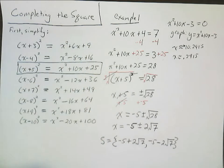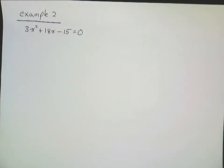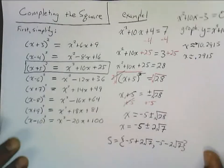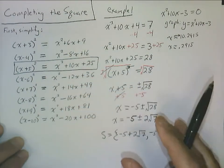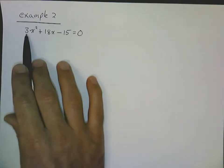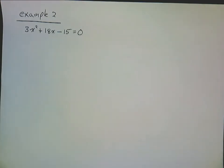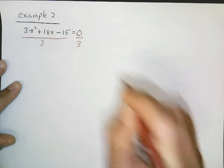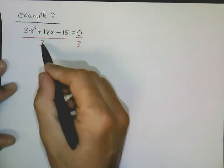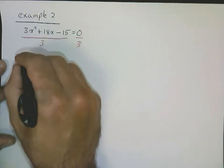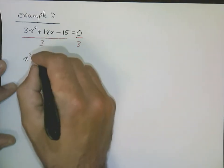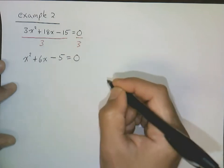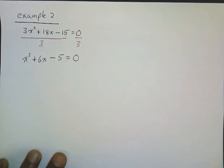Let's do one more example for the case where a is not 1. Back here, all of our warm-up expressions had a coefficient of x squared equal to 1. Here we have 3x squared plus 18x minus 15 equals 0 — we've got a problem with that 3. But it's pretty easy to deal with: we simply divide both sides of the equation by 3. Distributing the division, we get x squared plus 6x minus 5 equals 0.